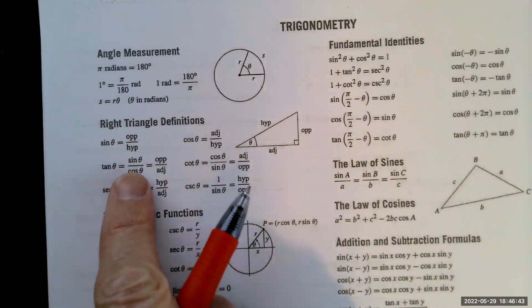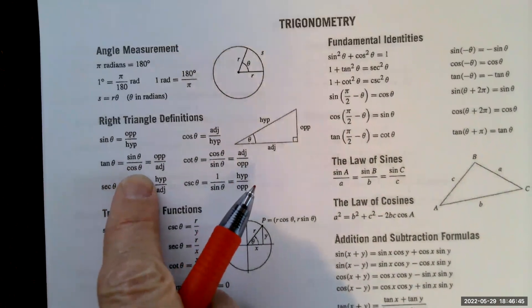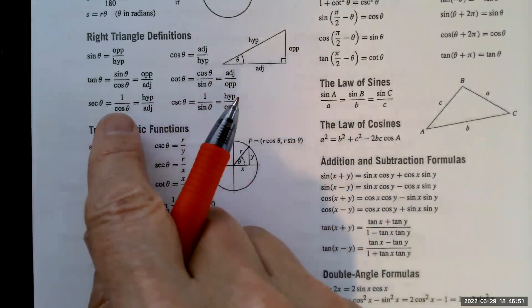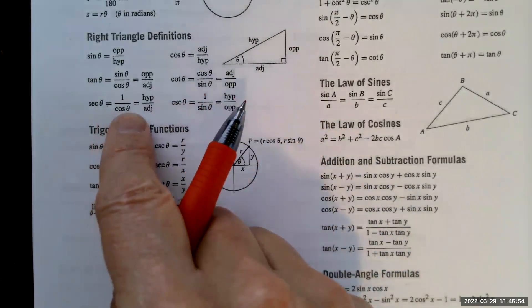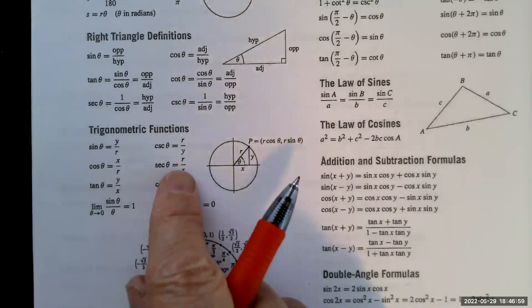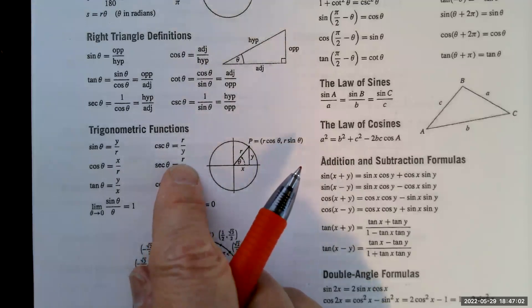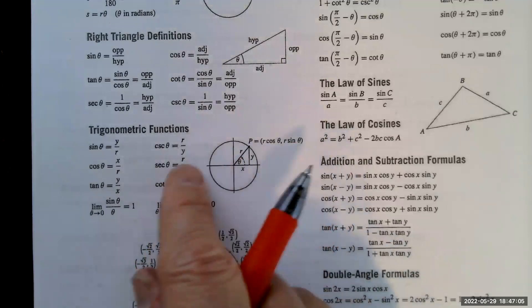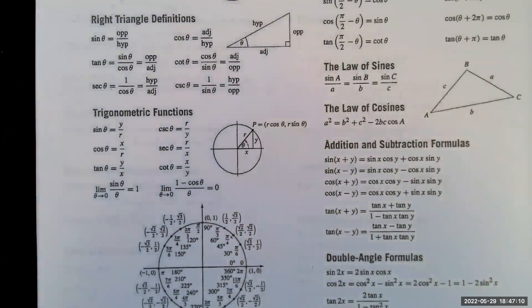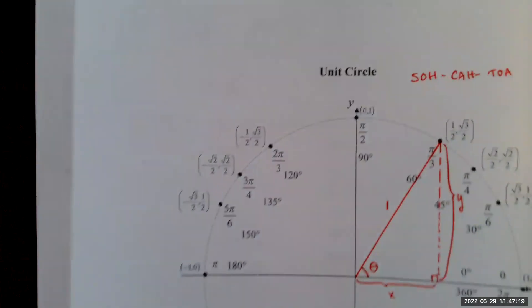The tangent of theta is sine over cosine, so in terms of the unit circle it's y over x. The secant is the reciprocal of cosine — 1 over x. On an arbitrary circle of radius r, you just have r there; if the radius is 1, it simplifies. The cosecant is the reciprocal of sine, and cotangent is the reciprocal of tangent.